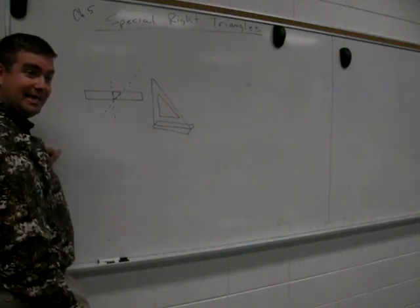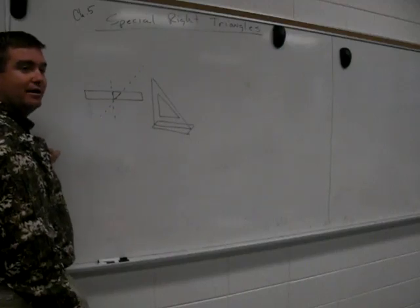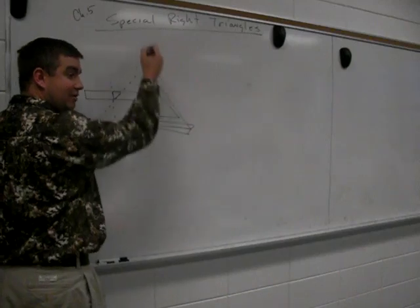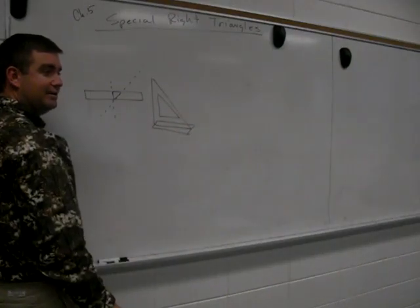Speed square. It's called a speed square. You put it on the board and it either gives you a 45-degree angle or it gives you a 90-degree angle.